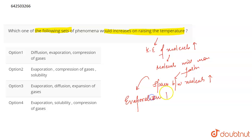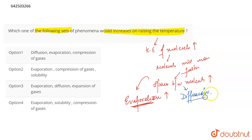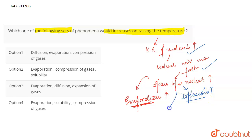Evaporation increases because as the kinetic energy of the molecules increases with raising the temperature, the molecules can easily vaporize — they can easily go into the vapor state because they are now moving very fast. The second phenomenon that can increase is diffusion. Diffusion is a property of gases — the mixing of two gases — and it also increases on increasing temperature because the molecules are now moving faster, have large spaces between them and high kinetic energy, so they can easily diffuse with each other.